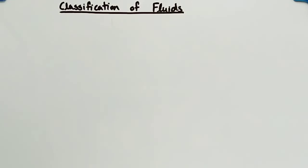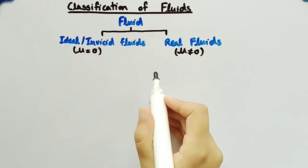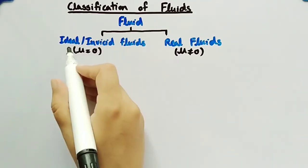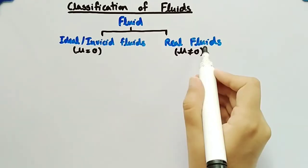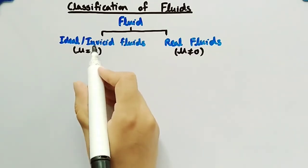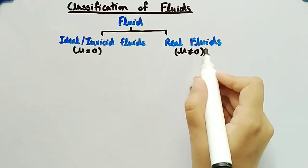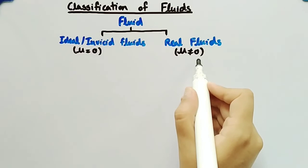In this video, we will discuss classification of fluids. Fluid is divided into two categories: ideal or inviscid fluids and real fluids. Viscosity of ideal fluids is equal to zero, where viscosity of real fluids is not equal to zero.